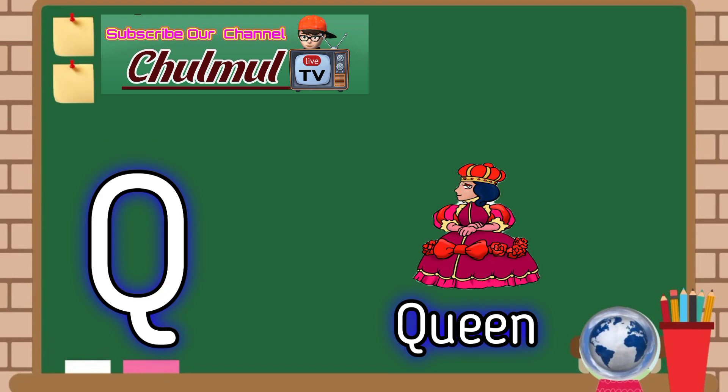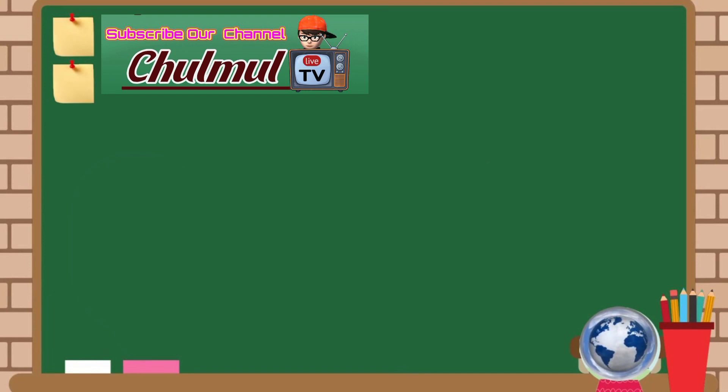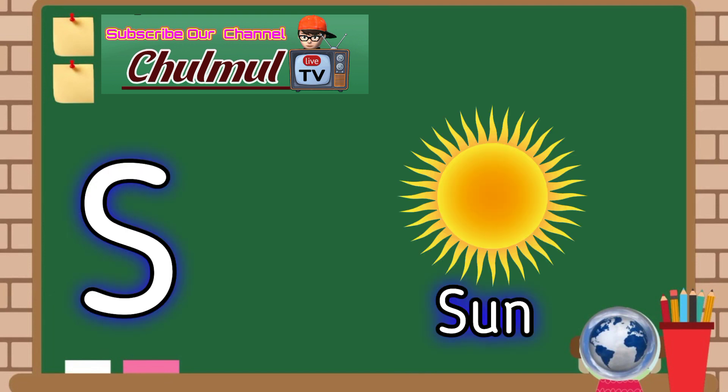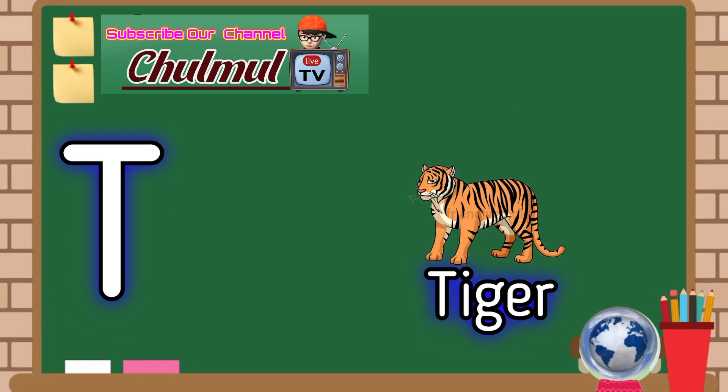Q for queen, R for rose, S for sun, T for tiger.